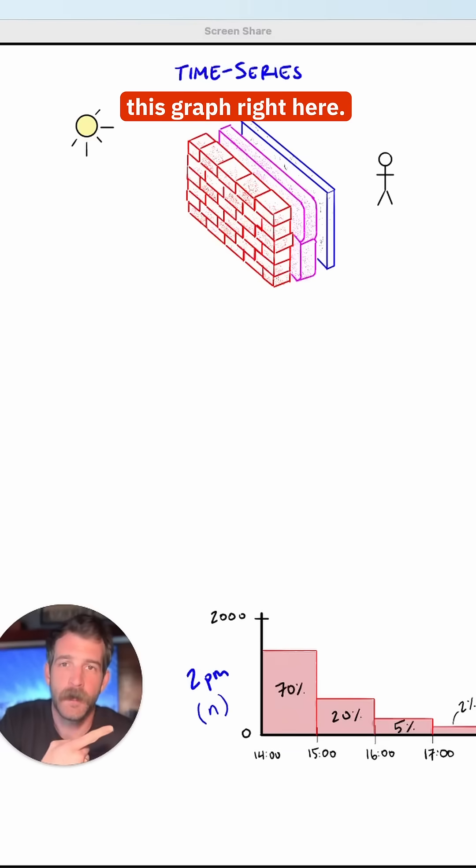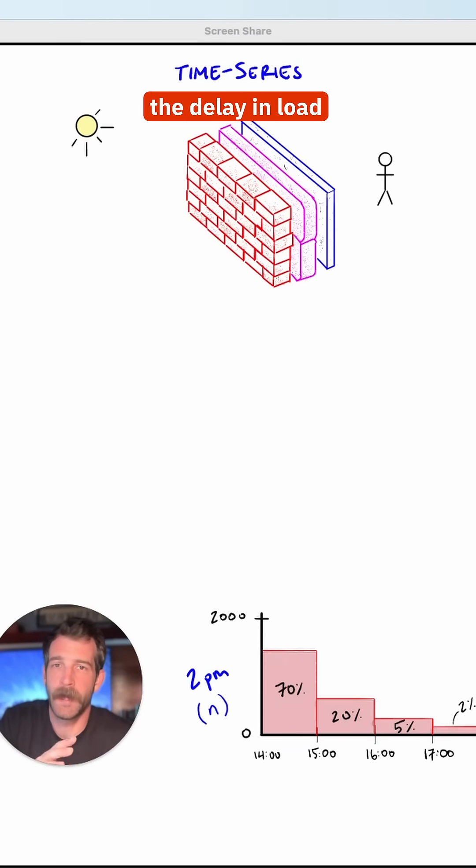This is where time series comes in. Take a look at this graph right here. This accounts for the delay in load entering the space. And the time series for an assembly defines how much heat is transferred with each passing hour.